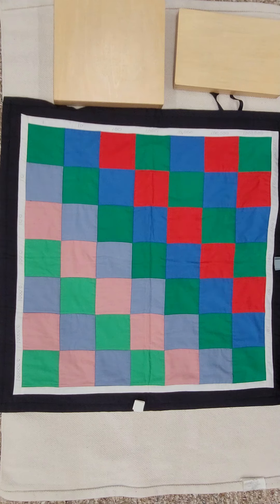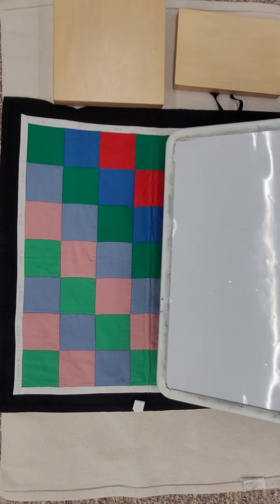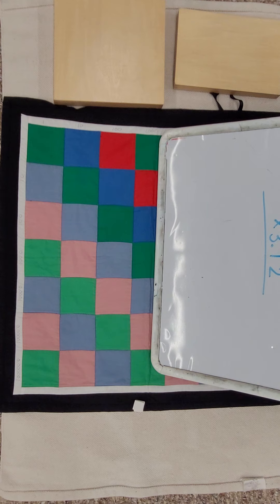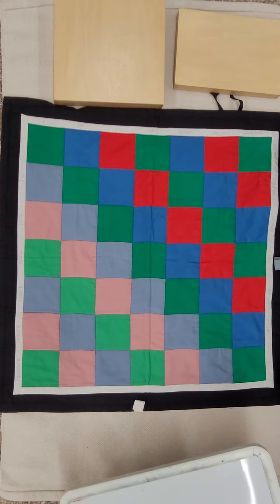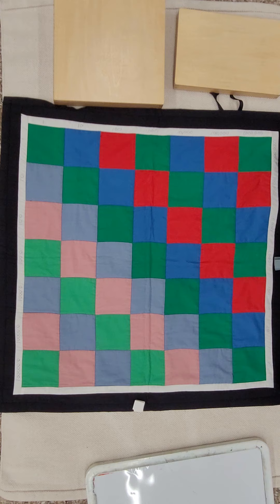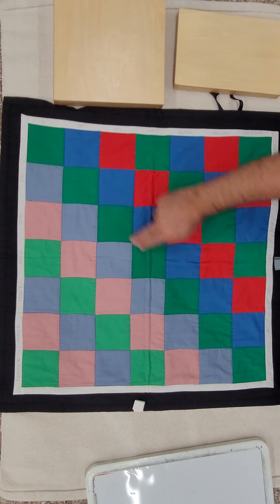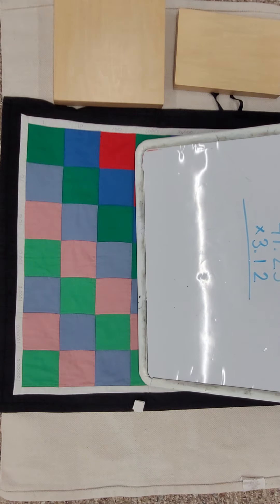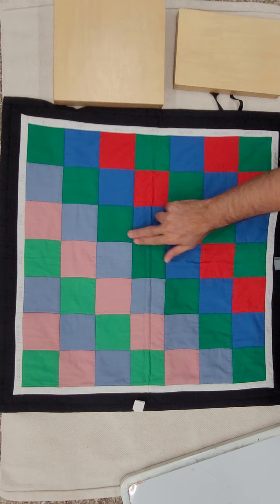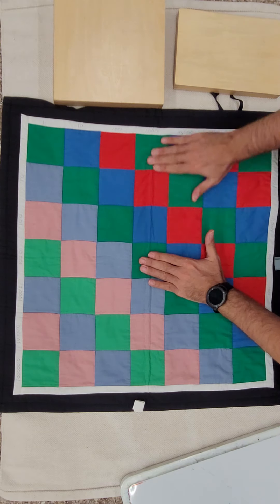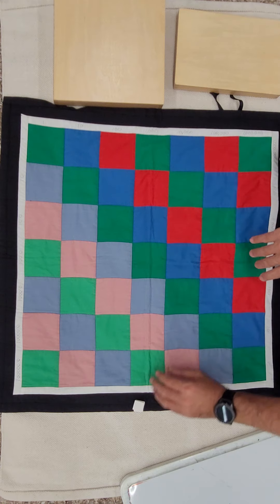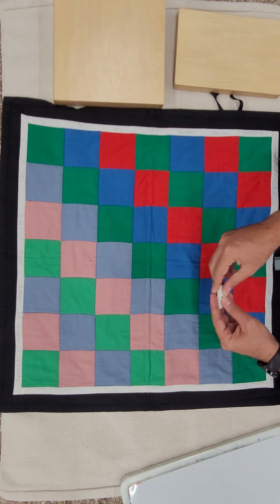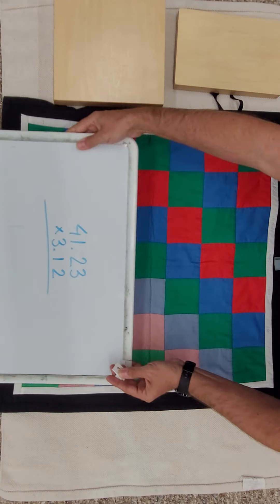As always, we're going to use it for multiplication, and I'm going to use probably one of the most complex cases — multiplying by two numbers with decimals. We have 41.23 times 3.12. We're going to start setting up the problem on the checkerboard. You can set it up wherever you feel comfortable. I'll explain my approach. Looking at the numbers, because we're talking about two decimal positions, I want to put it around here so I have room for the decimal positions and the tens.